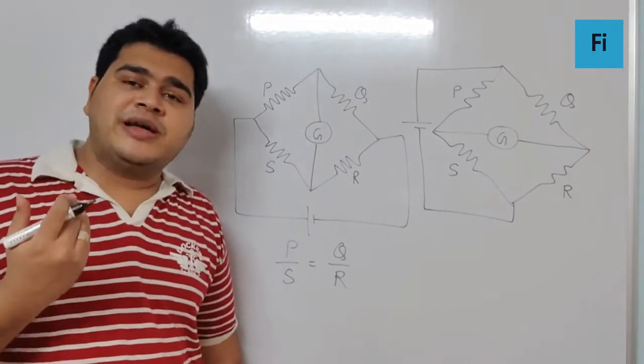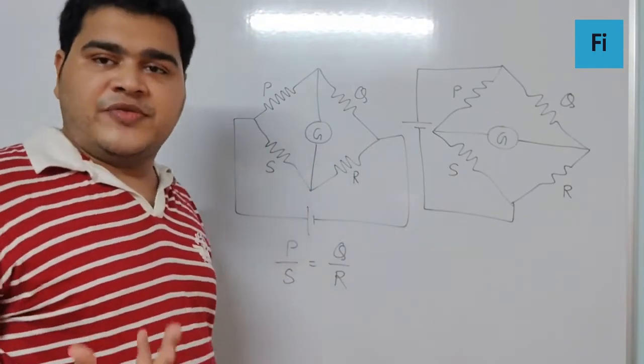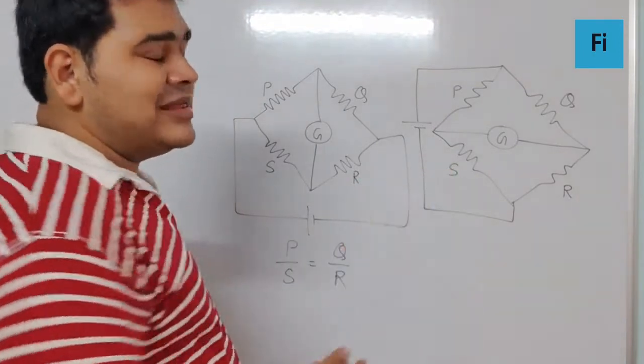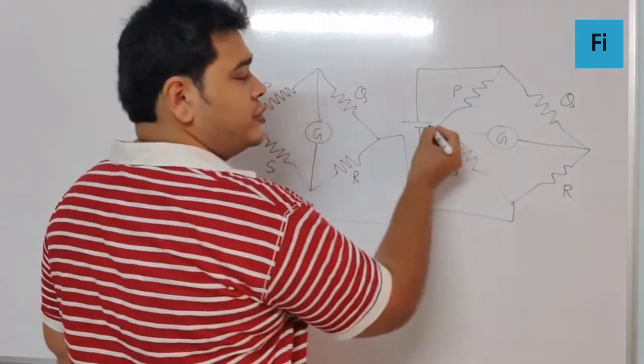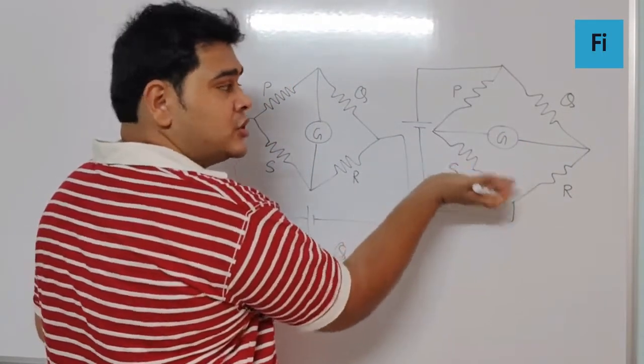Basically, the ratio of the resistances on one side of the galvanometer is equal to the ratio of the resistances on the other side of the galvanometer. This is the basic idea. So over here, if I apply the same logic, I can say this is how the galvanometer is connected—this is one side and this is the other side.